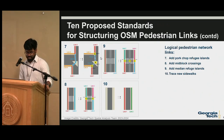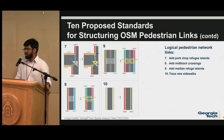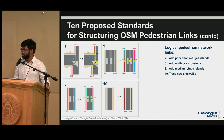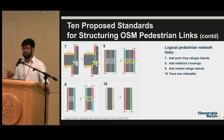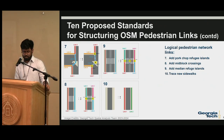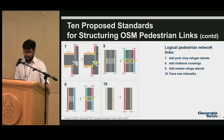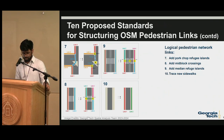A really interesting case is pork chop islands. There is no set standard we could find for pork chop islands, so people tend to trace them in multiple ways. What we want is a simplified approach: just a single node in the center of the pork chop island connecting to multiple crossing links, which then connect to the sidewalk network.